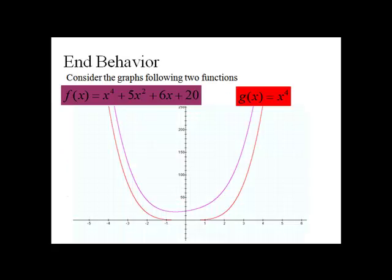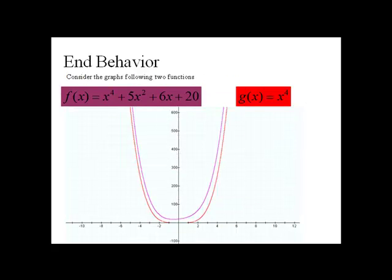This can be seen graphically as well. Here are the graphs of the two functions. The purple graph is x to the fourth plus 5x squared plus 6x plus 20, and the red graph is x to the fourth. They have a similar shape.